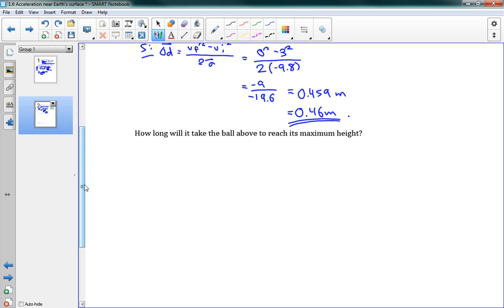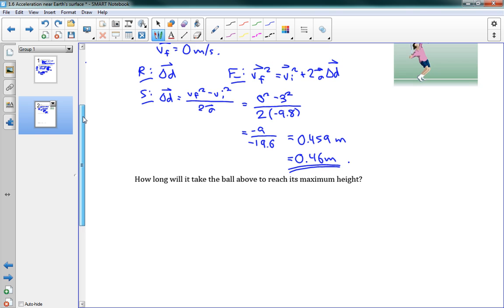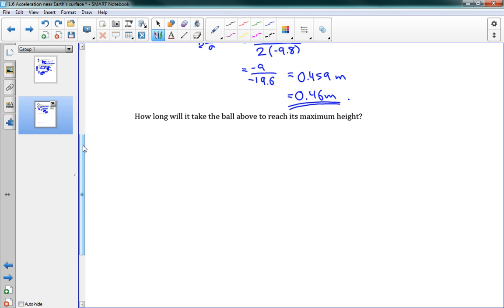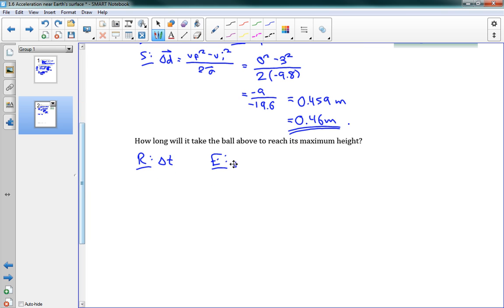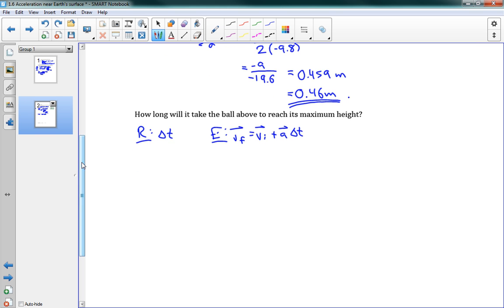And finally, how long will it take the ball to reach its maximum height? We're given the same information. So I don't need to write my given again. Now we are required to find delta t. So we want to use a different equation. I will use vf equals vi plus a delta t. Again, we have some vectors here.